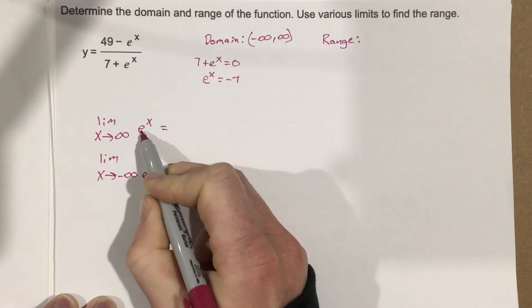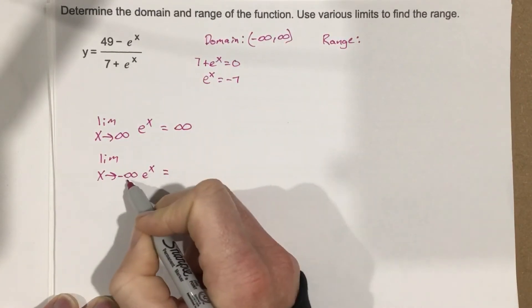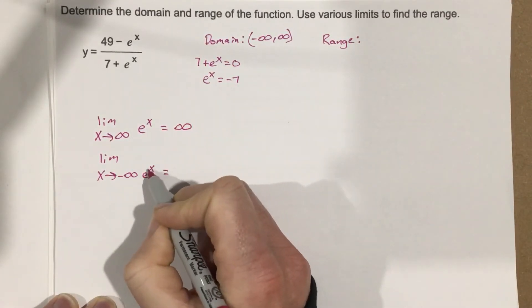Well, if I plug in a really large number in for e to the x, that's 2.71 to a really large number. That's just going to approach infinity. And if I plug in negative infinity, which is going to be a really small number here.